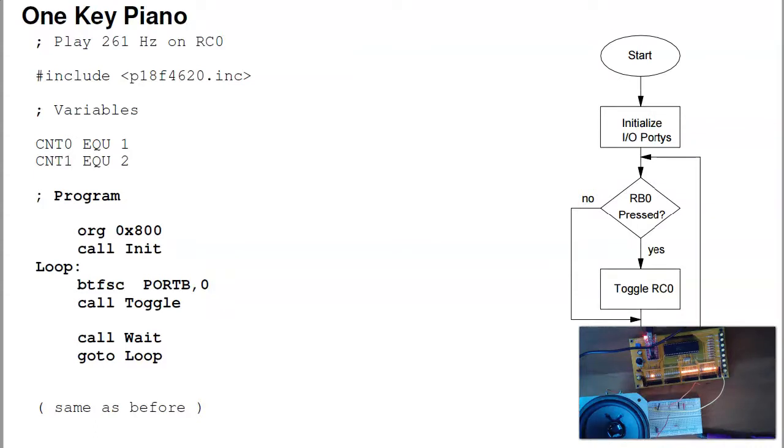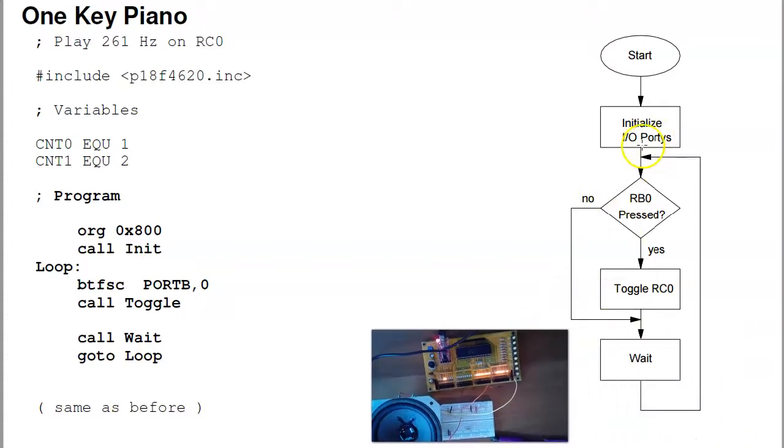With a one-key piano, you can do things like play some talking head songs, about all the notes that you need, some other new age music. A way to do that is this flowchart. What happens is I'm going to initialize the ports. I'm going to check, is the button pushed? If it's not pushed, don't toggle. If I don't toggle, I won't hear anything. If it is pushed, I do toggle.